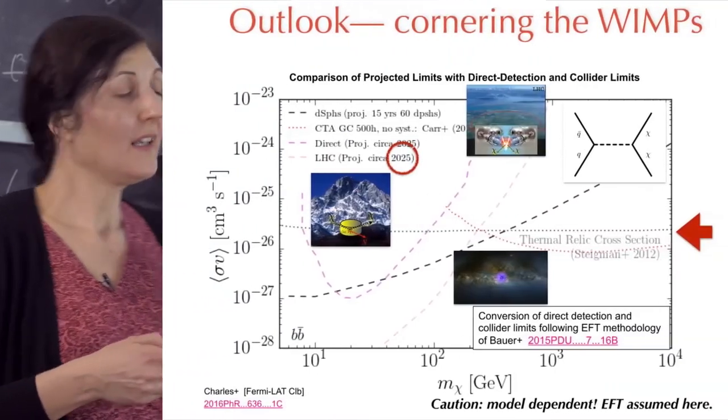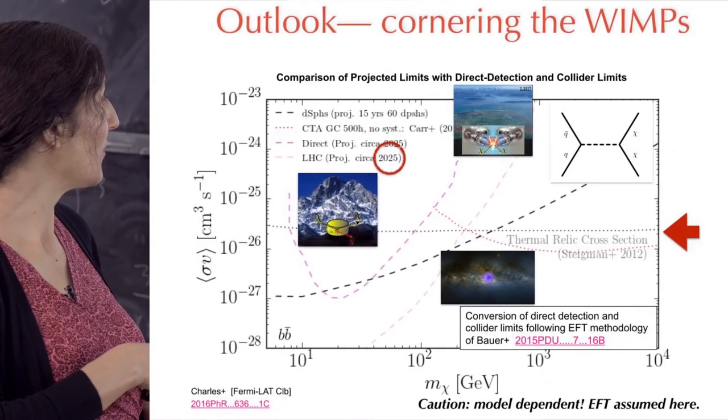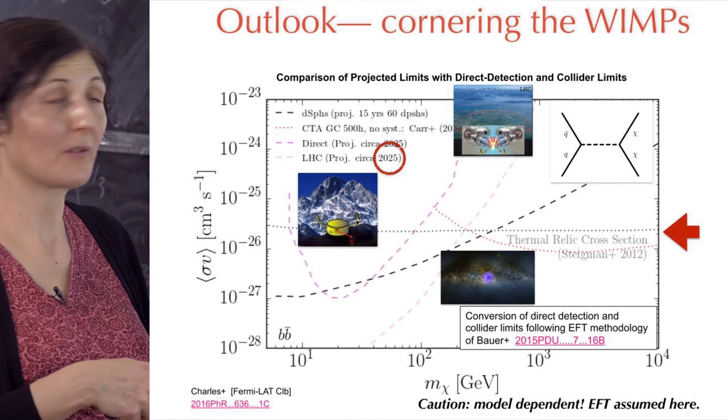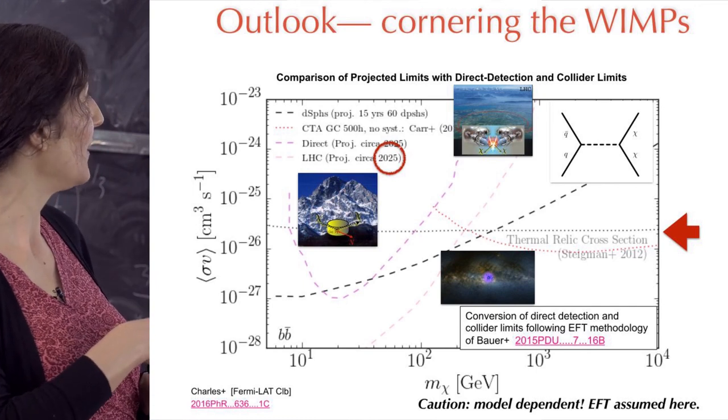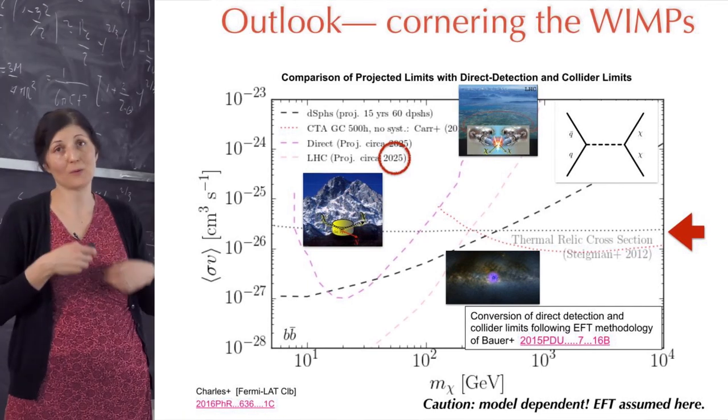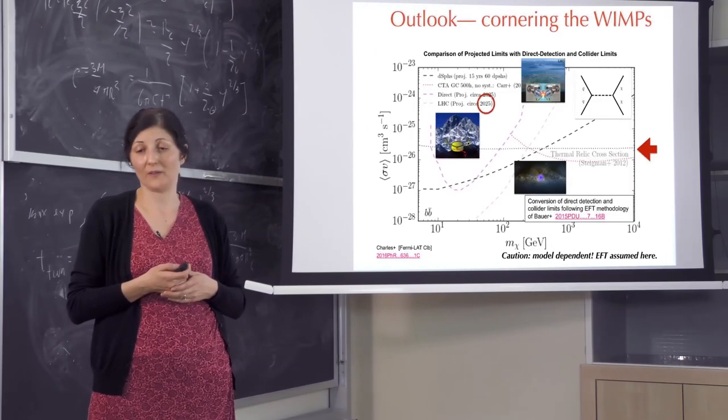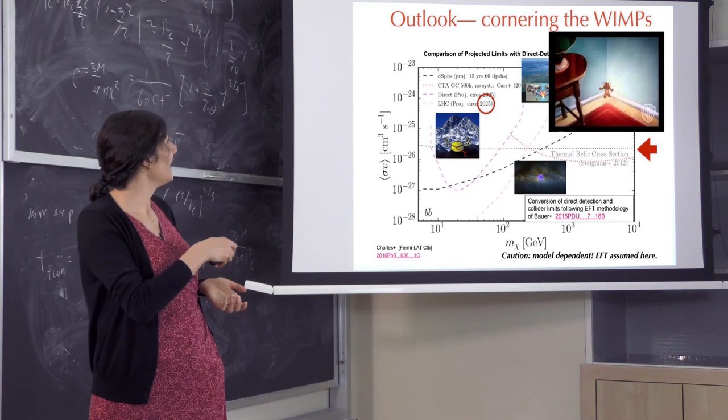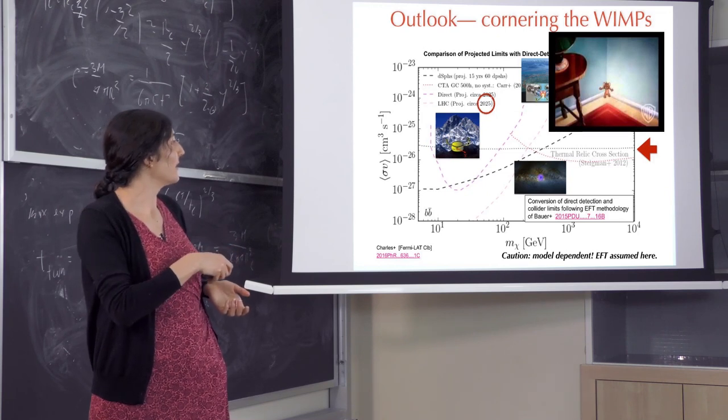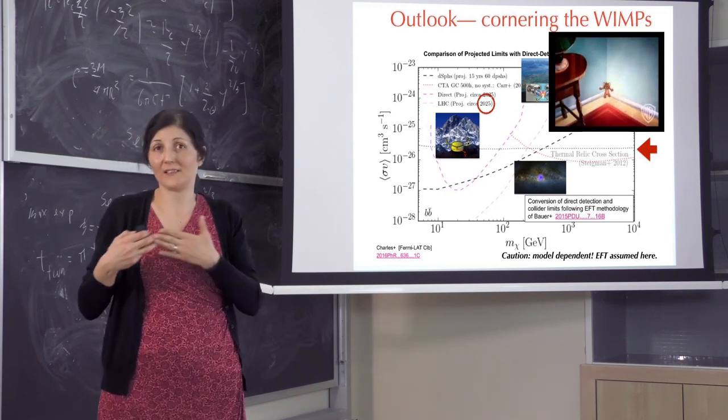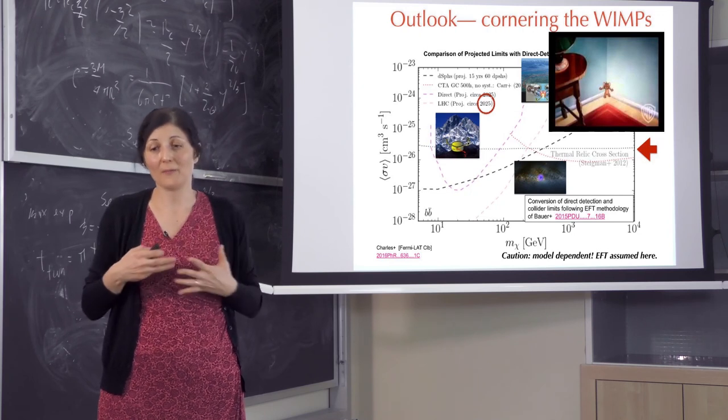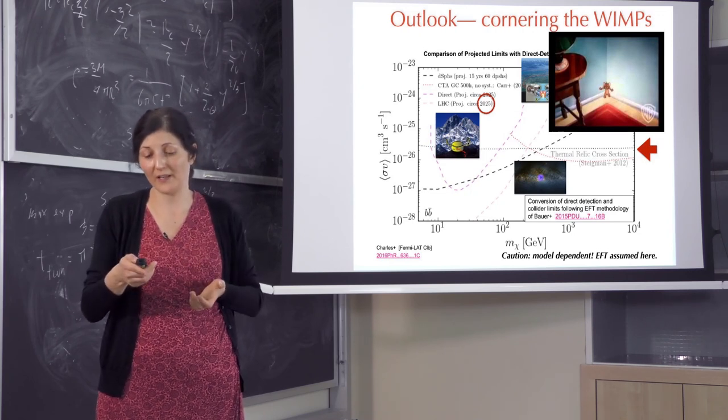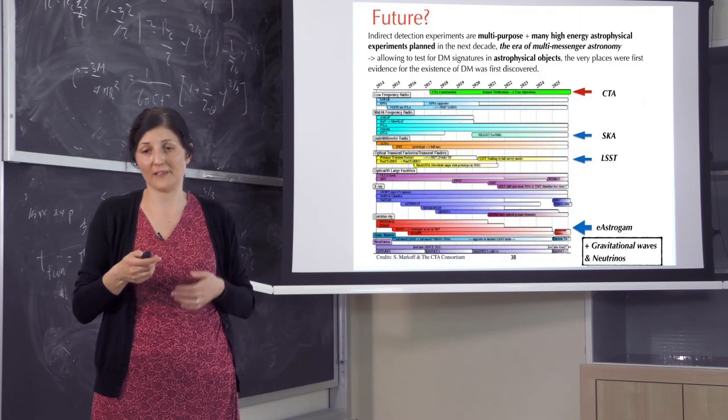We do not look only with astrophysics for dark matter signal. We also look in colliders and in direct detection experiments which will probably be covered in these lectures. Once when we combine all these three approaches, basically WIMPs are quite cornered. We are now exactly in this, as I said, golden time and we can probe many of these models. They are not excluded yet but we are improving our sensitivity.